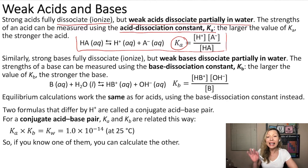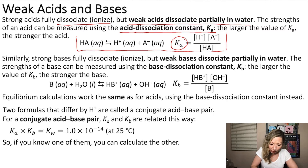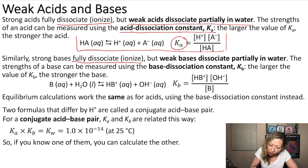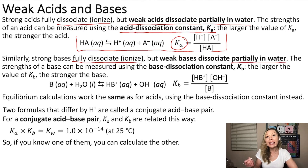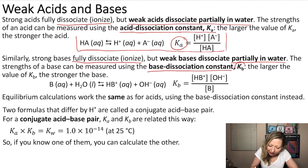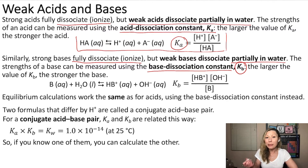Now, this works exactly the same way for bases. When you have a strong base, it's going to fully dissociate in water, but weak bases dissociate only partially in water. And the strength of a base can be measured using the base dissociation constant, or K sub B. So the larger the value of K sub B, the stronger the base is.